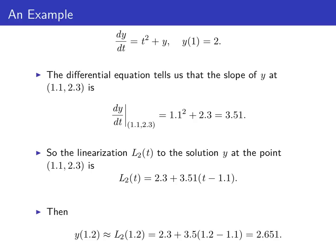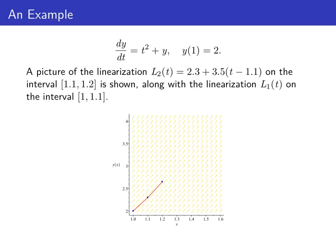Then we use this linearization. Linearization will be a good approximation to y as long as we stay close to our base point, 1.1 in this case. So y(1.2) is approximately L₂(1.2). Just evaluate L₂ when t = 1.2, and we get 2.651. We can extend our graph of the solution by drawing L₂ on the interval [1.1, 1.2] and attaching it to linearization L₁.